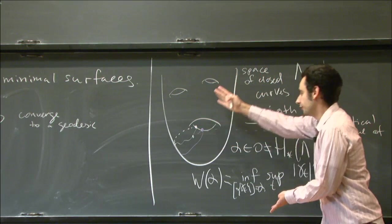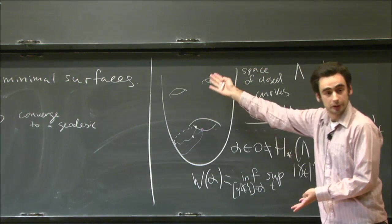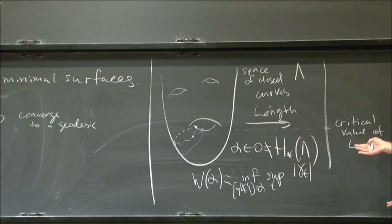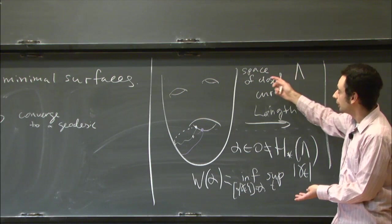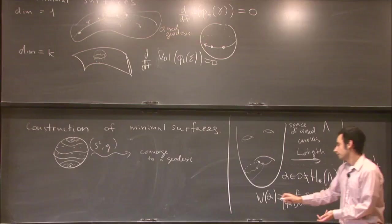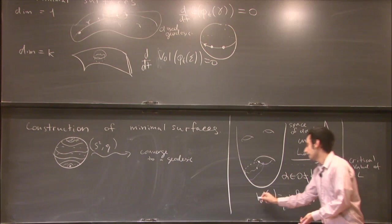This is the theory which is called Morse theory for the space of closed curves, and we have an expert in the audience for this theory, Nancy Hingston. It's a wonderful, rich theory. I'd like to point out one subtlety here: it would seem that because we have a lot of different homology classes in the space of closed curves, you would get a lot of critical values, and the critical values are length of closed geodesics.